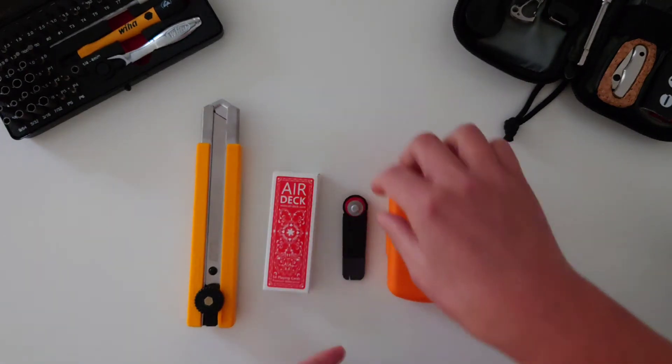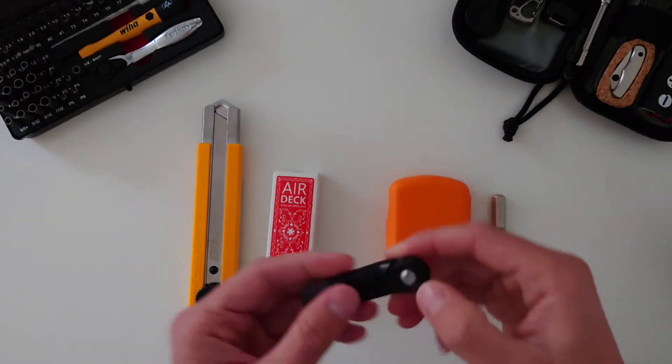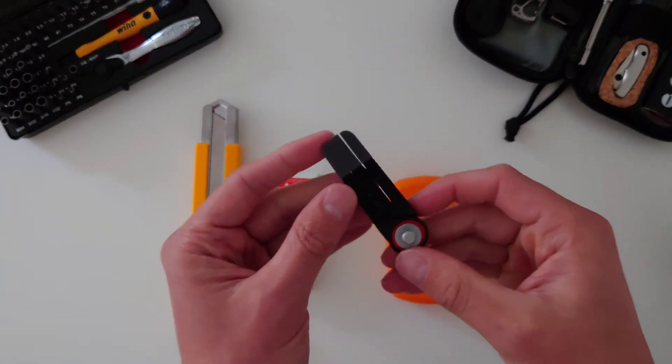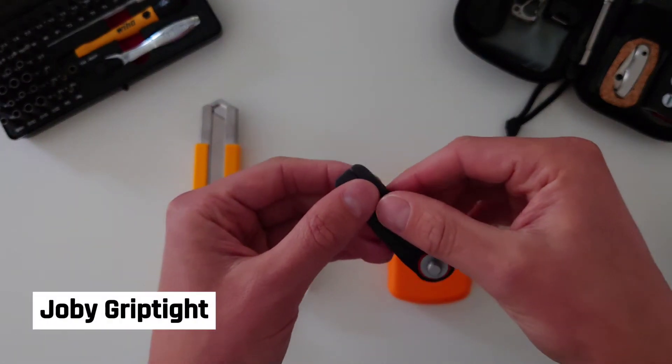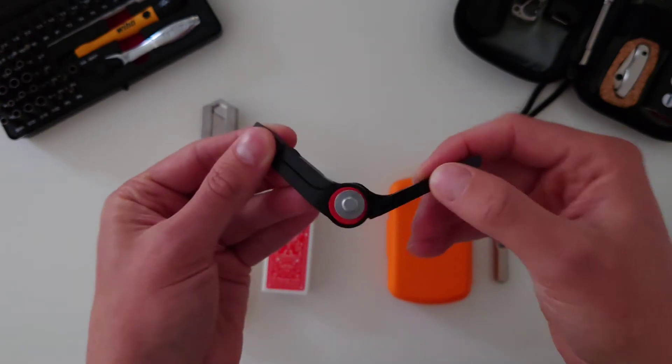The next item, which is two parts, but unfortunately one of the parts is being used to film this video, is the Joby GripTite, the micro stand.